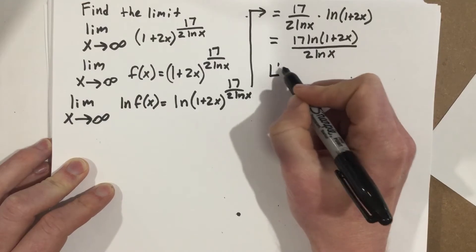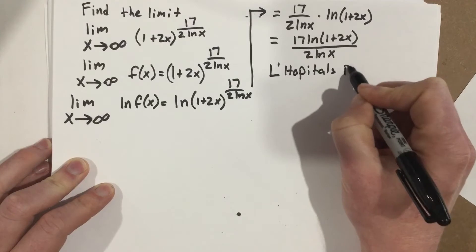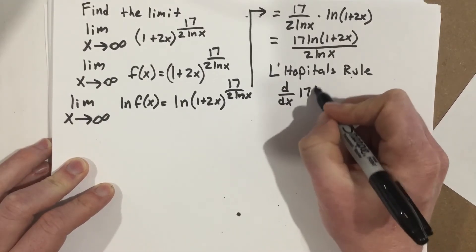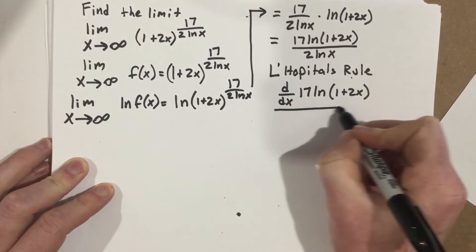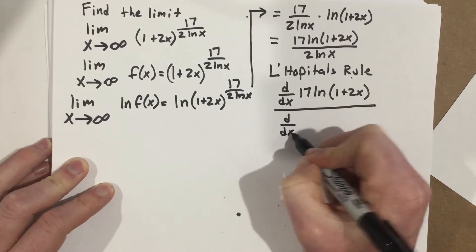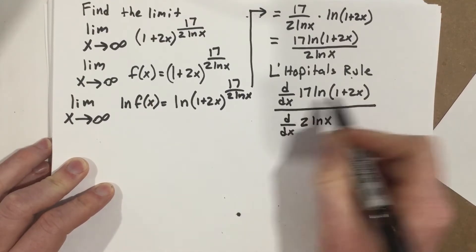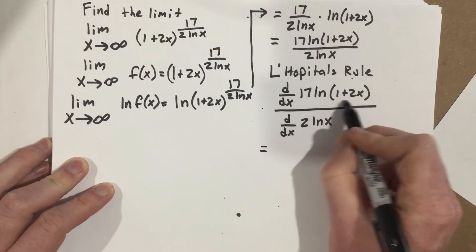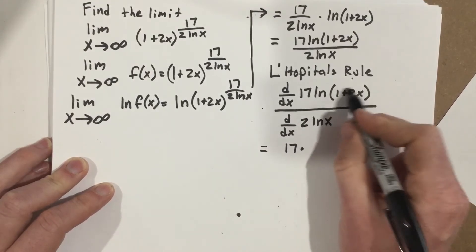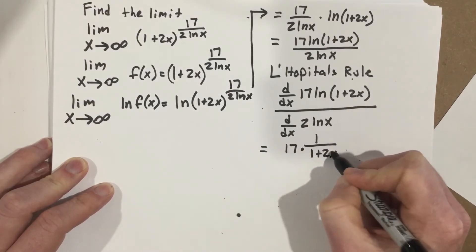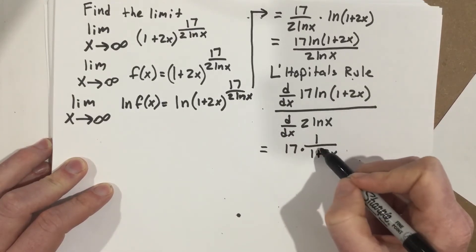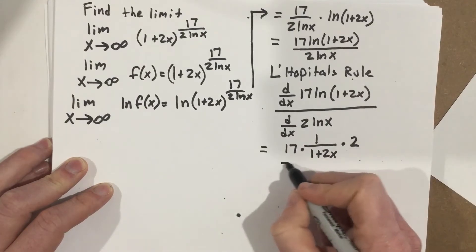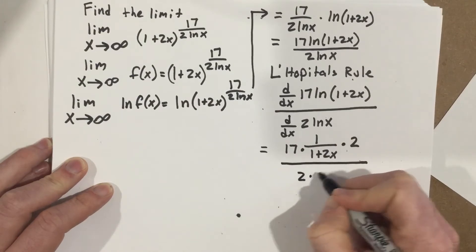Now I'm going to use L'Hôpital's rule. L'Hôpital's rule tells me to take the derivative of the top and the derivative of the bottom. When I take the derivative of the top, I get 17 times the derivative of natural log, writing this as a reciprocal: one over one plus two x. Because I have an inside function, I take it times the derivative of the inside function, which is two. So that's times two over — the derivative of the bottom is two times one over x.